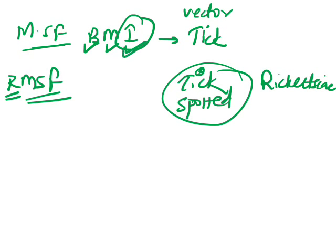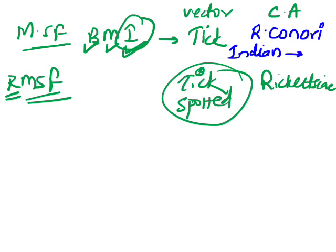What is the causative agent for Indian tick typhus? The causative agent is Rickettsia conorii. How to remember this? It's only in Indian English that we say 'conori' — foreigners would say it in a sophisticated way, but Indians call it in typical Indian English: 'conori.' So Indian tick typhus is caused by Rickettsia conorii.